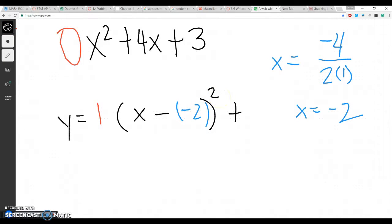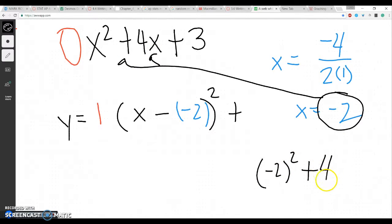And now I'm going to figure out what my y-value is. So I take that, I plug it into here and here. So I would get negative 2 squared plus 4 times negative 2 plus 3. So I'd get 4 minus 8 plus 3, which would give me negative 1.